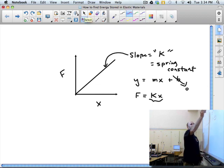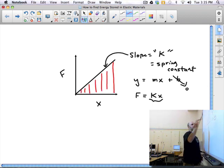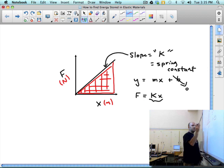To find energy, we want the area of this graph. And since this shape is a triangle, notice the area is going to be newtons times meters in units. We're going to take the base times the height and cut that in half.